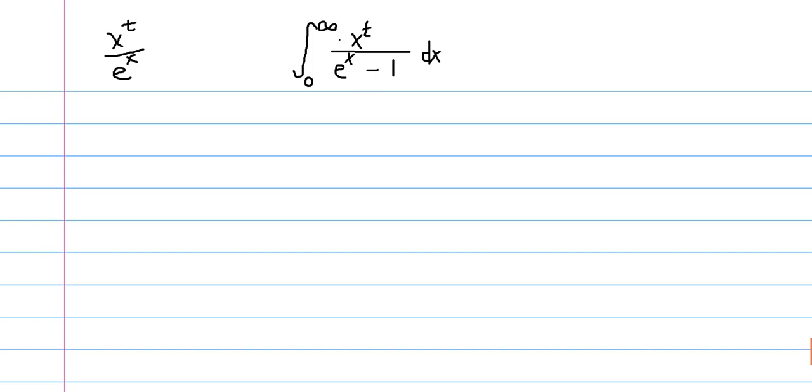Another thing is that parts will not be helpful because normally if we had x to the t, if we did the DI method, we would put it in the D and then differentiate it until we get just constant, but we would have to integrate 1 over e to the x minus 1, which is possible, but then we'd have to integrate it over and over t times. And I'm not really looking forward to doing that.